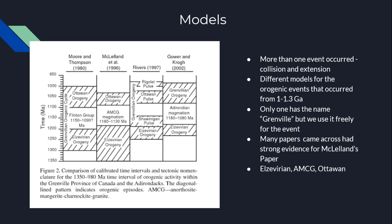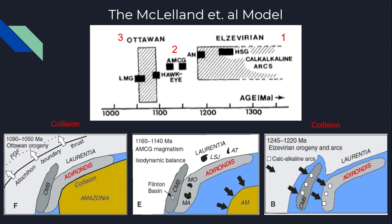As mentioned at the beginning of this presentation, there are many different models discussed for the Grenville Orogeny. They are mostly based on three different events: a primary orogenesis, a resting period, and a secondary orogeny. The one we're focusing on is the McClellan model, which starts with the Elzevirian Orogeny, then AMCG magmatism, and finally the Ottawaian Orogeny — split into events one, two, and three.